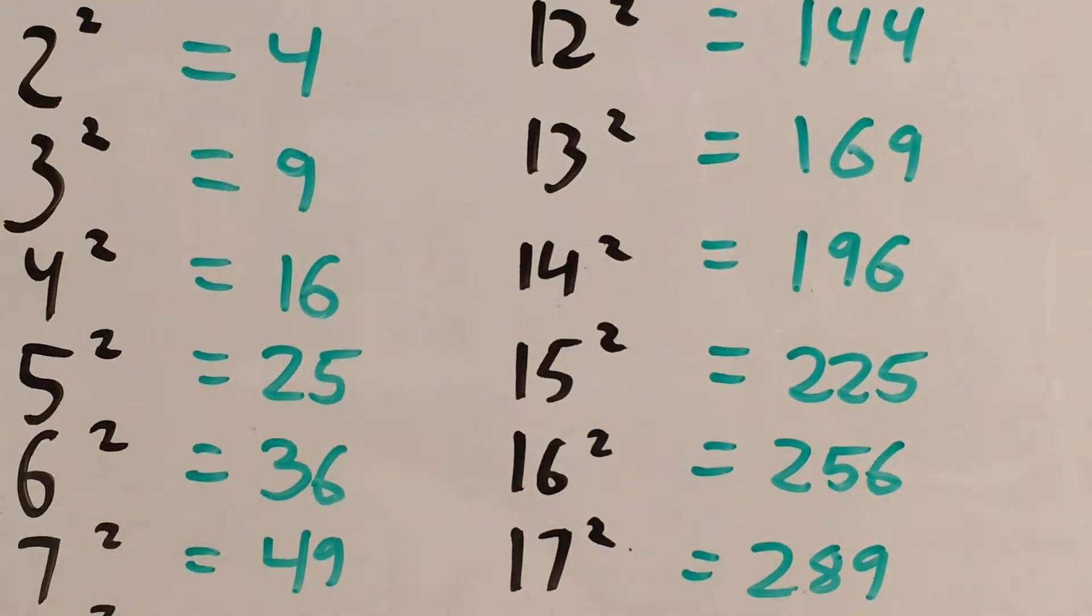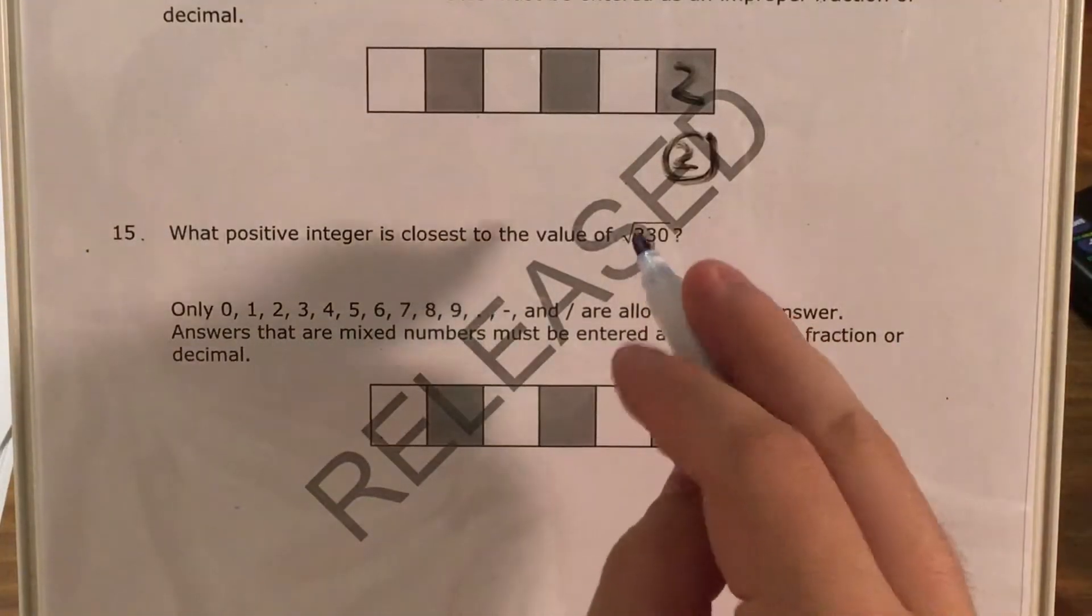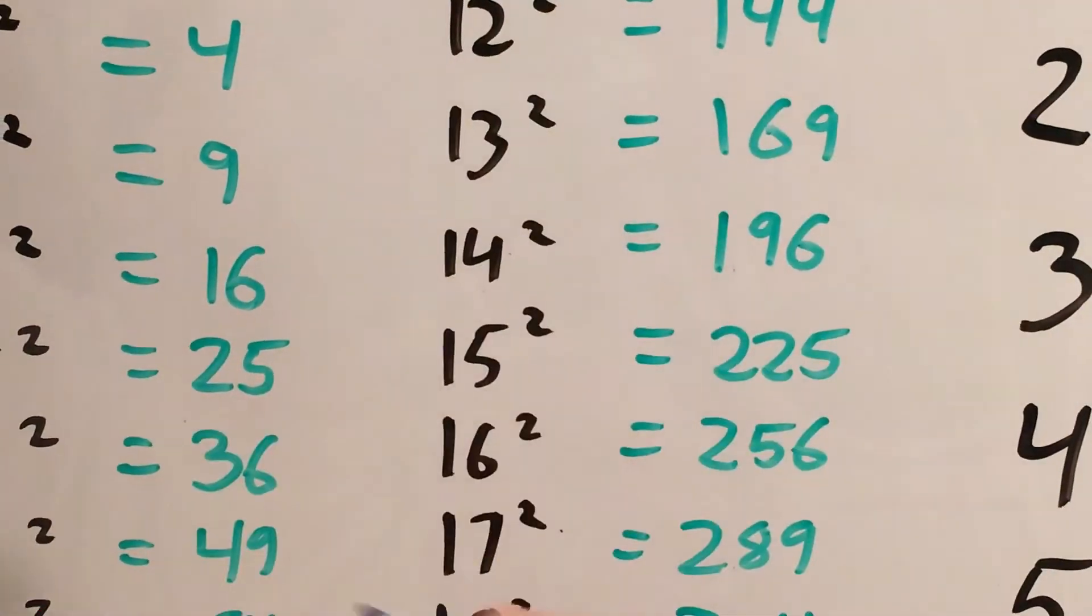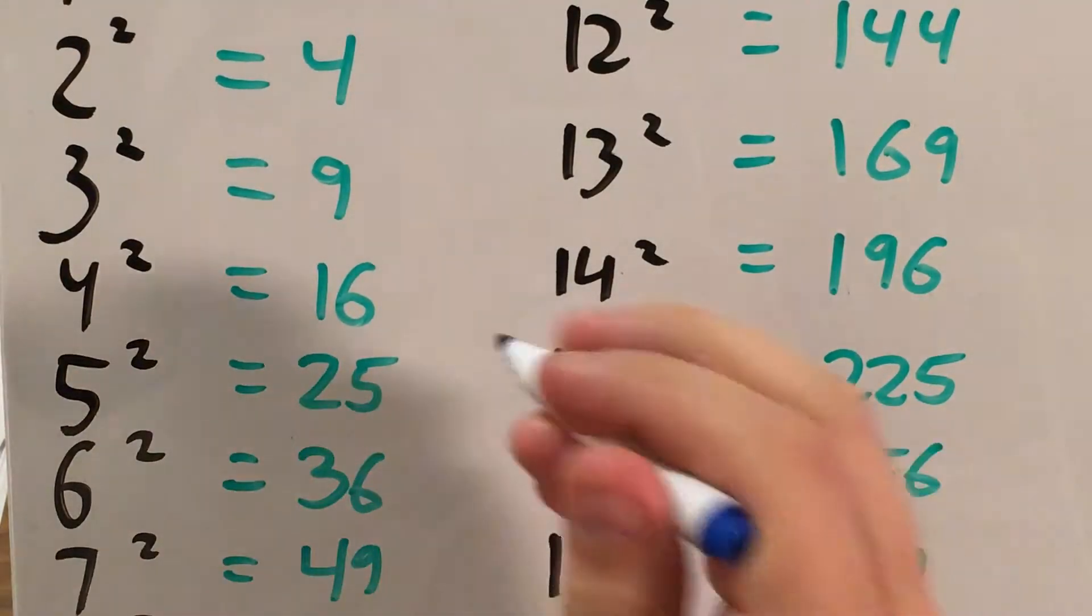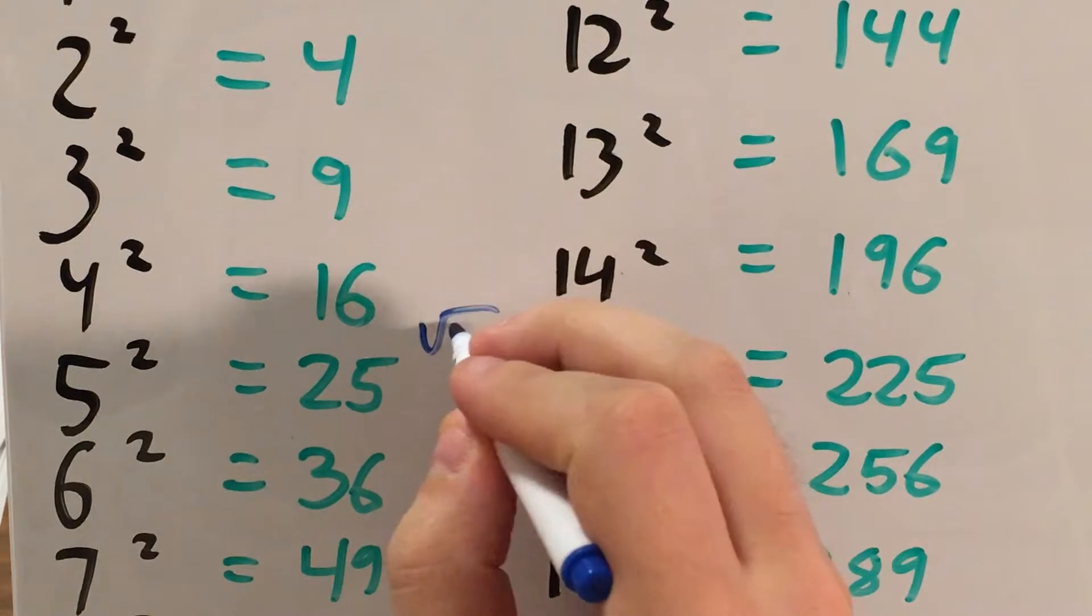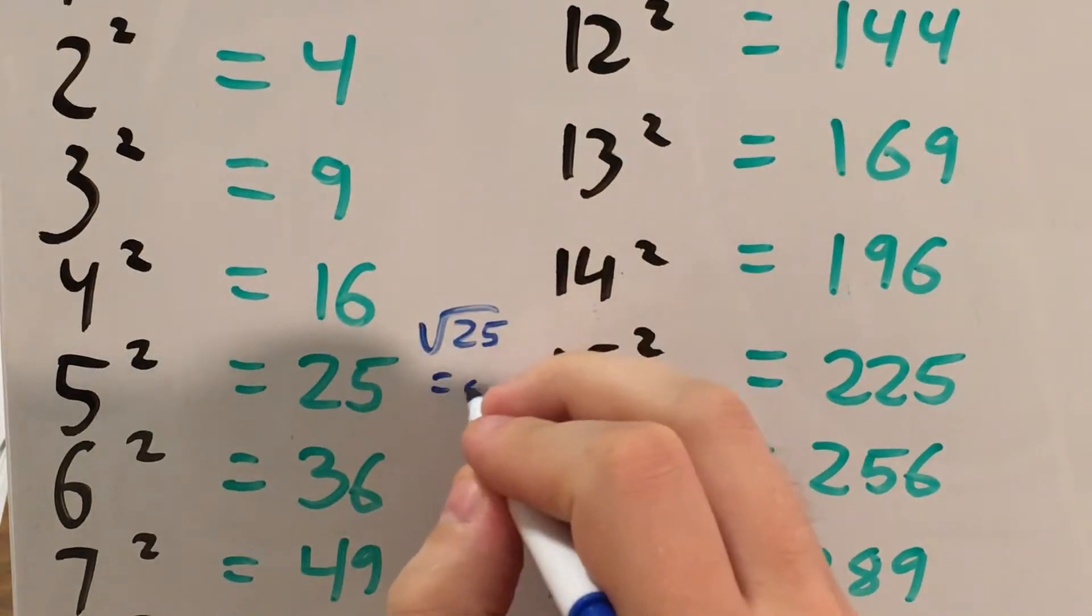Now what I'm looking for is some number that's really close to the value inside my square root on the side of my square numbers. So for instance, if I know that 5 squared equals 25, then I know that the square root of 25 equals 5.